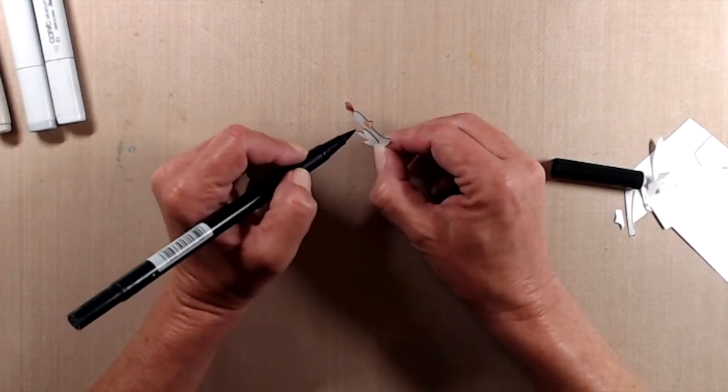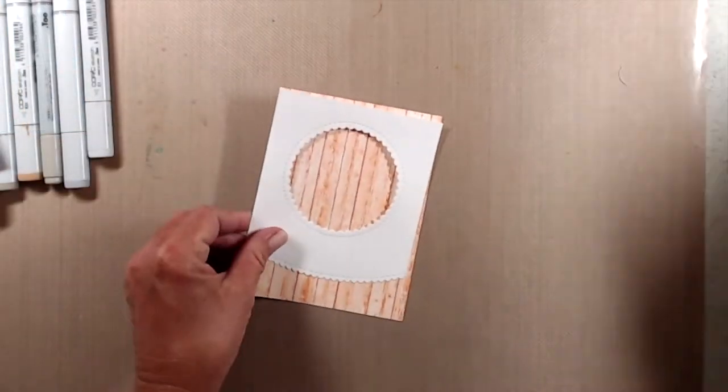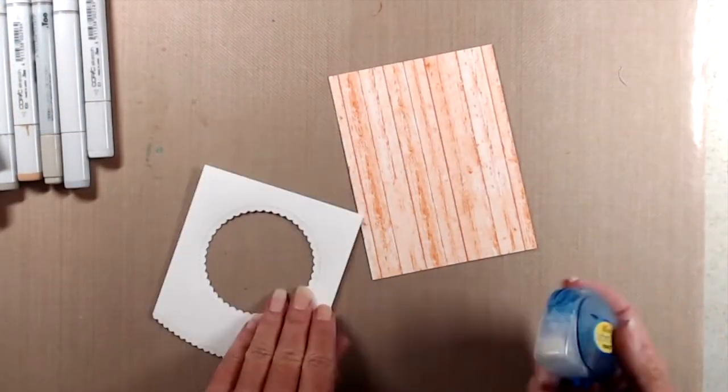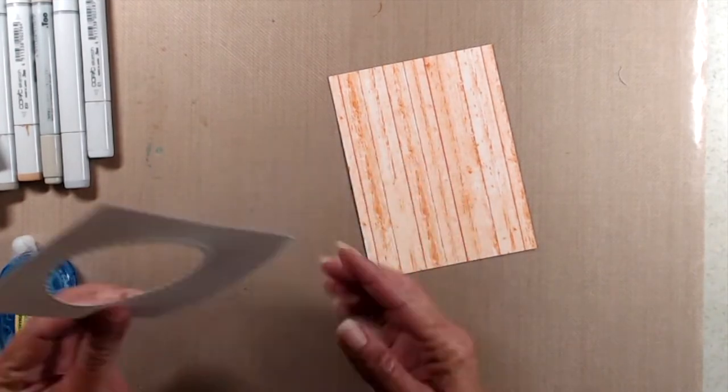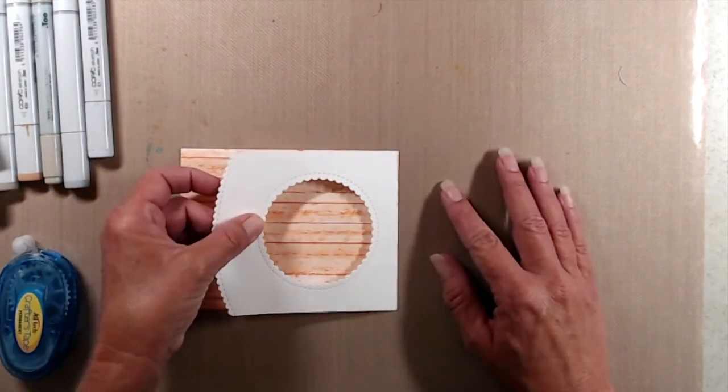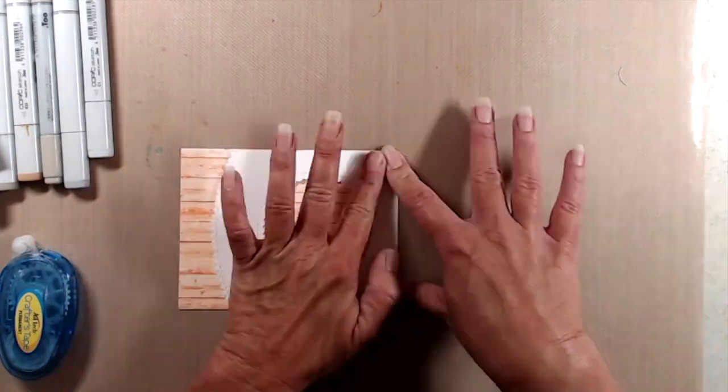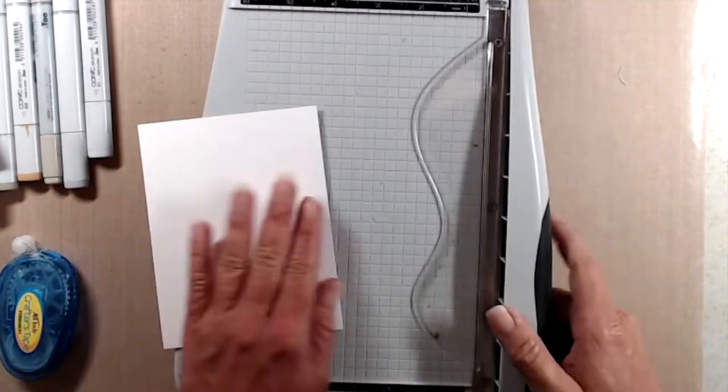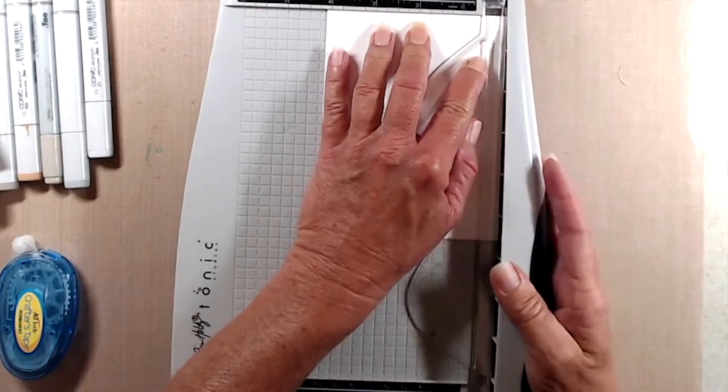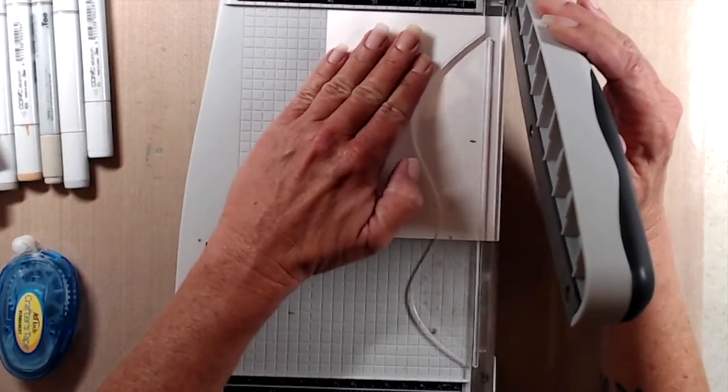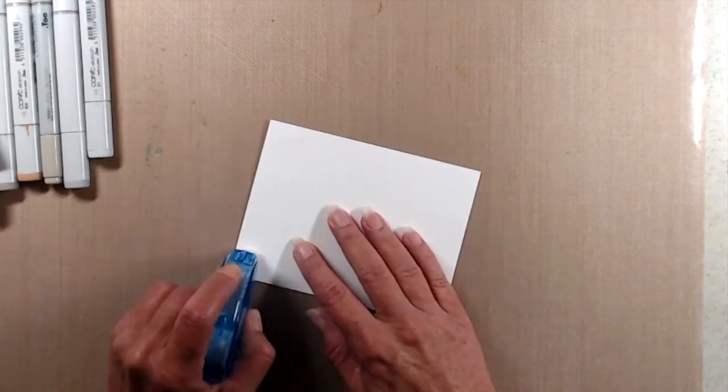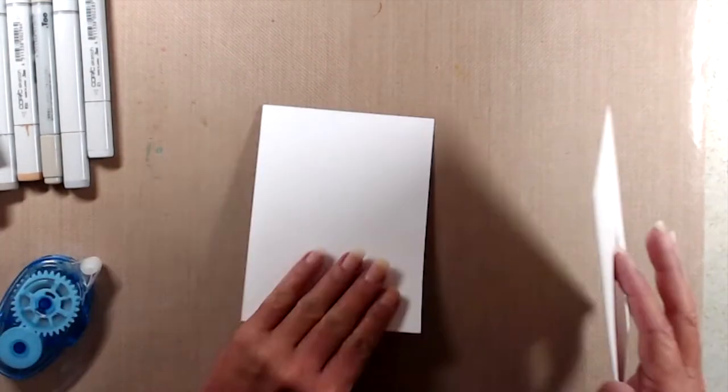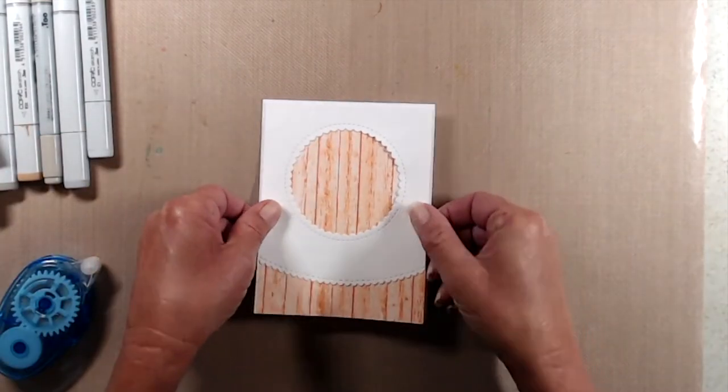I had run a piece of white cardstock through my Gemini Junior with a peekaboo circle die from Gina Marie designs as well as a wavy edger die from whimsy stamps. I adhered that to a piece of the wood grain patterned paper from the kit. I did end up trimming that down just a little bit so it would be slightly smaller than my card base and I used my tape runner to adhere that piece to the front of my card.